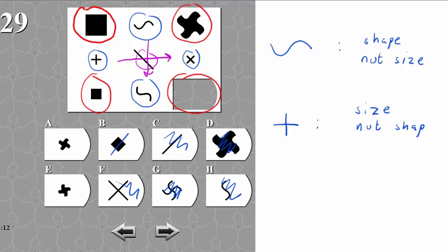Anyway, if we have to rotate this one 45 degrees, it's not going to be this one, it's going to be this one. So the answer is E.